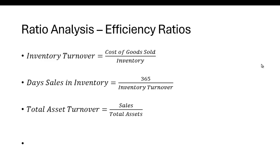I want to discuss some efficiency ratios. Efficiency ratios let us determine how efficiently the company is being run, and there are a lot of them you can look at. I'm just going to look at a few here. The reason we use ratios is they allow for comparison — you can't just look at the absolute number because a bigger company is going to have larger numbers, but the ratio may be very similar to a smaller company. In fact, the smaller company may actually have a better ratio.